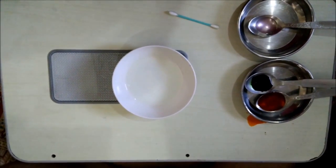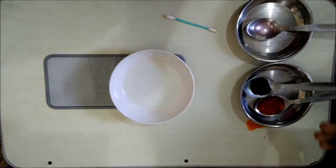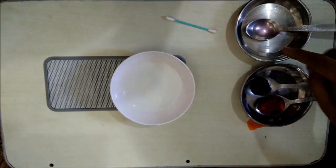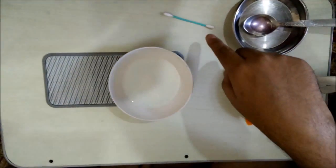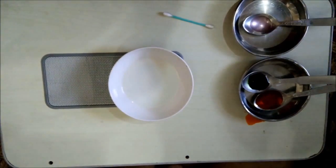So today we have a new experiment. We've got a bowl of milk, two different edible colors, a spoonful of hand wash, a cotton bud, and a dropper. Let's see how this experiment works.